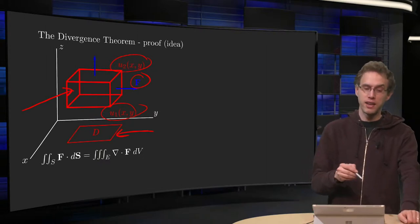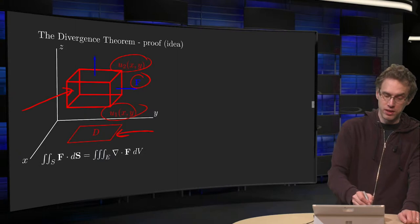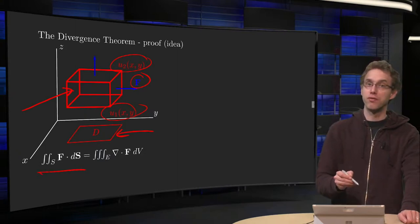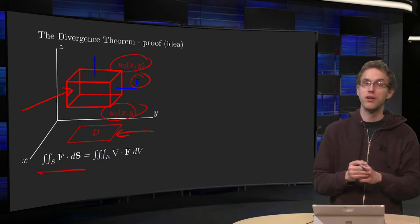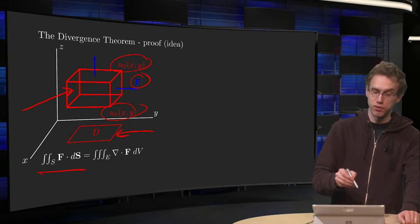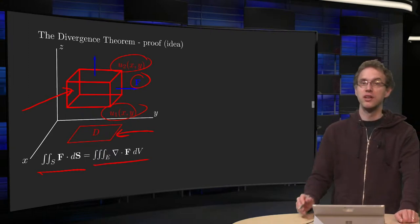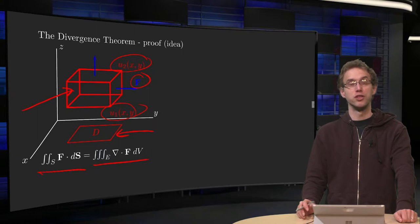So those are the names, and then we will show that the triple integral of the vector field across the boundary, so the flux, equals the triple integral of the divergence of capital F.